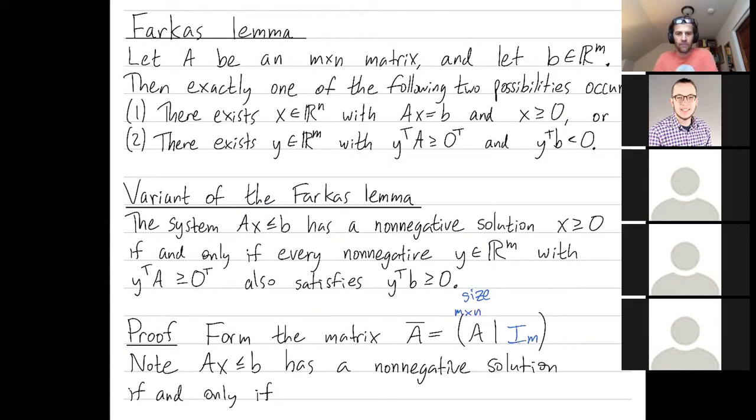And then we care about when A x at most b has a non-negative solution, right? That's what we're trying to understand in the variant. Well, that happens if and only if A bar x bar equals b has a non-negative solution.